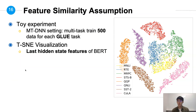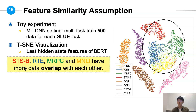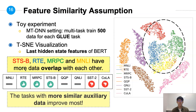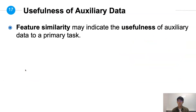To further confirm our assumption, we conduct a pilot experiment. We multitask train on 500 data from each GLUE task and visualize the features using TSNE. In the figure, it is seen that the scatter points from MNLI, RTE, MRPC, and STSB have more overlap than others. This corresponds to their performance improvement when doing multitask auxiliary learning. The task with more similar auxiliary data can improve the most, confirming that feature similarity can be a great indicator for the usefulness of auxiliary data.